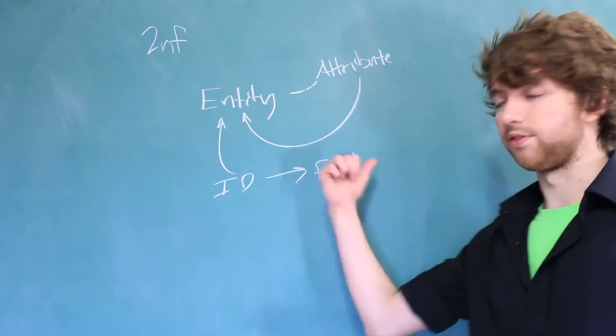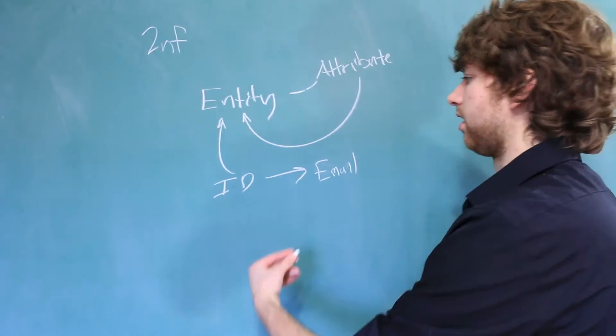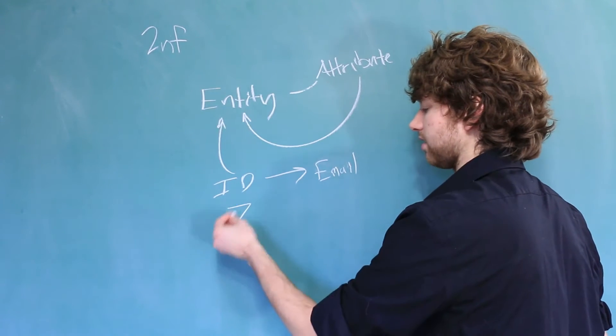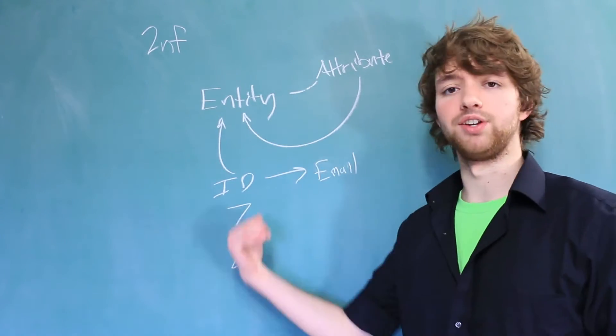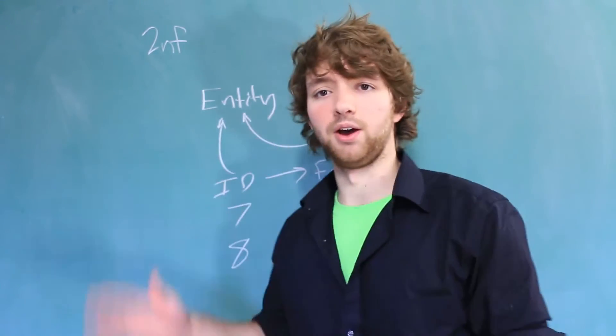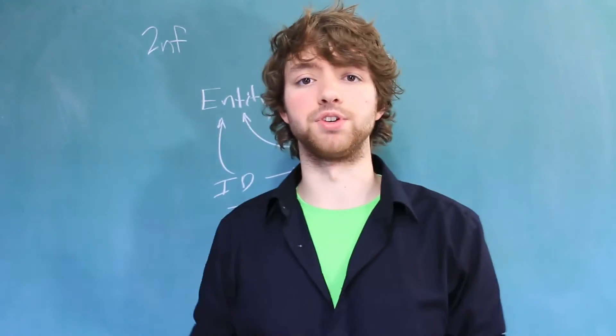Even though the arrow is drawn this way, this is saying when we change the ID from let's say 7 to 8, the email is going to change because it's talking about a different user. So if I lost you already, don't worry about that. I'm going to go through an example to make more sense.